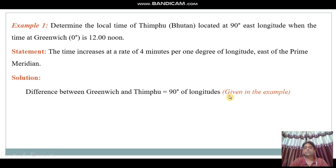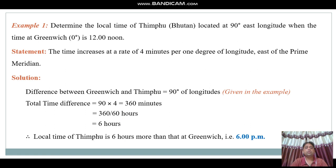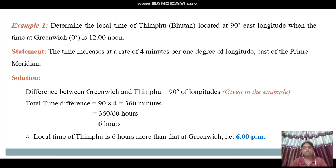The solution: the difference between Greenwich and Thimphu is 90 degrees of longitude. Total time difference equals 90 degrees multiplied by 4 minutes, giving 360 minutes. Converting to hours: 360 divided by 60 equals 6 hours. Therefore, the local time of Thimphu is 6 hours more than Greenwich. Since Greenwich is 12 noon, Thimphu's local time is 6 PM.